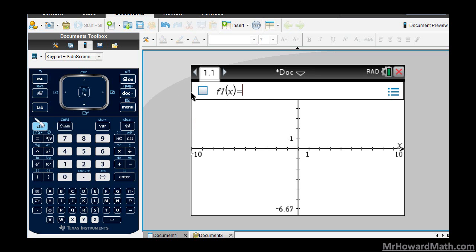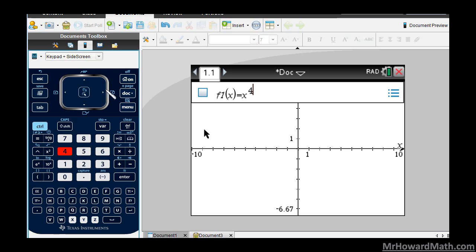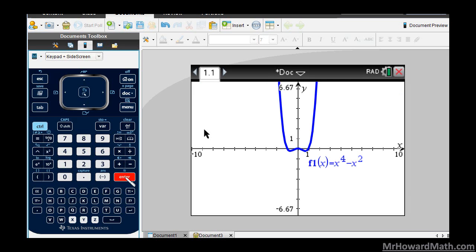Once I do that my f is there. If it's not there I can just hit the tab key and that will bring it up or close it depending on what I want to do. In my f1 of x, the first function, I'm going to put the problem that I want to check. For example, in this first one we'll use x to the fourth minus x squared. I'll hit enter and it will graph it.